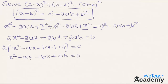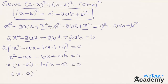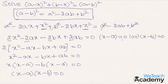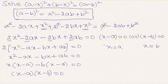From the first two terms, taking x as a common factor gives x into x minus a, and taking minus b as a common factor from the last two terms gives minus b into x minus a equal to 0. Equating both factors with 0 gives x minus a equal to 0 and x minus b equal to 0. Solving, we get x equal to a and x equal to b.